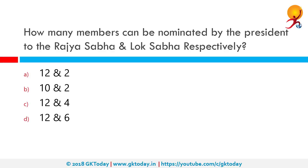How many members can be nominated by the President to Rajya Sabha and Lok Sabha respectively? The maximum strength of Lok Sabha is 552 members, of which 530 are elected from states, 20 are elected from Union territories and 2 are nominated by the President from the Anglo-Indian community as per Article 331. The correct answer is 12 and 2.